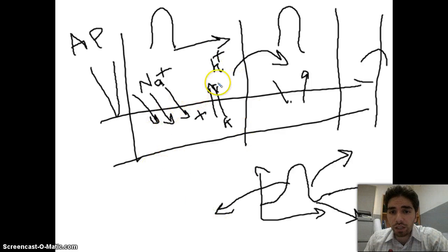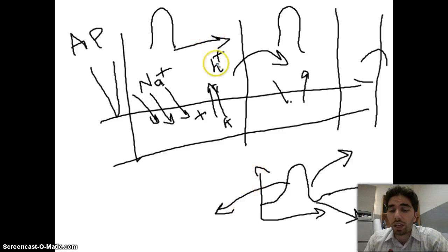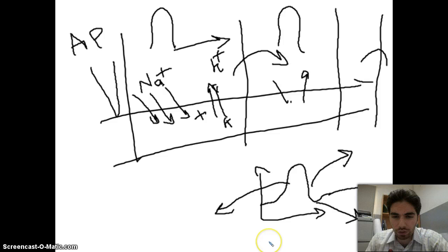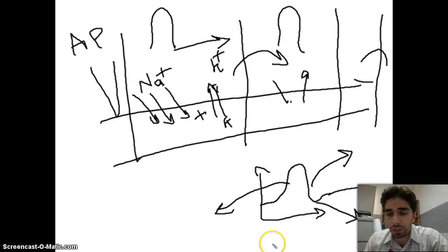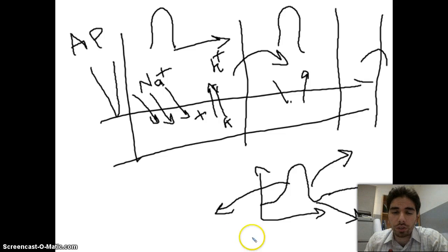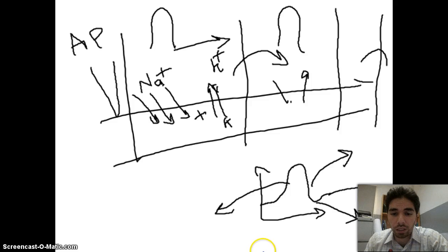If there is a myelin sheath, the action potential jumps between the nodes of the myelin sheath, which speeds up transmission. This is the limit of this video. I will post another video about synapses and the second part of the nervous system. For now, what you need to know is: action potential, resting potential, types of neurons, CNS and PNS. I hope this was helpful and I'll see you in the next video.